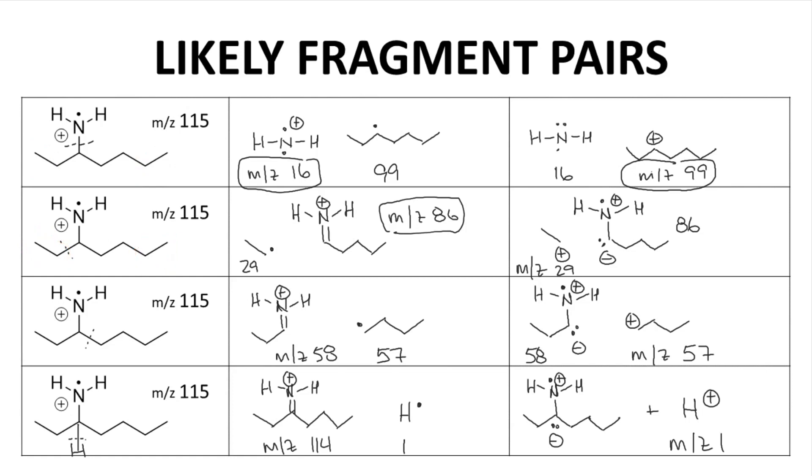So from a starting molecule, focus on the likely parent ion and the position of the radical cation will help you determine which fragments are most likely.